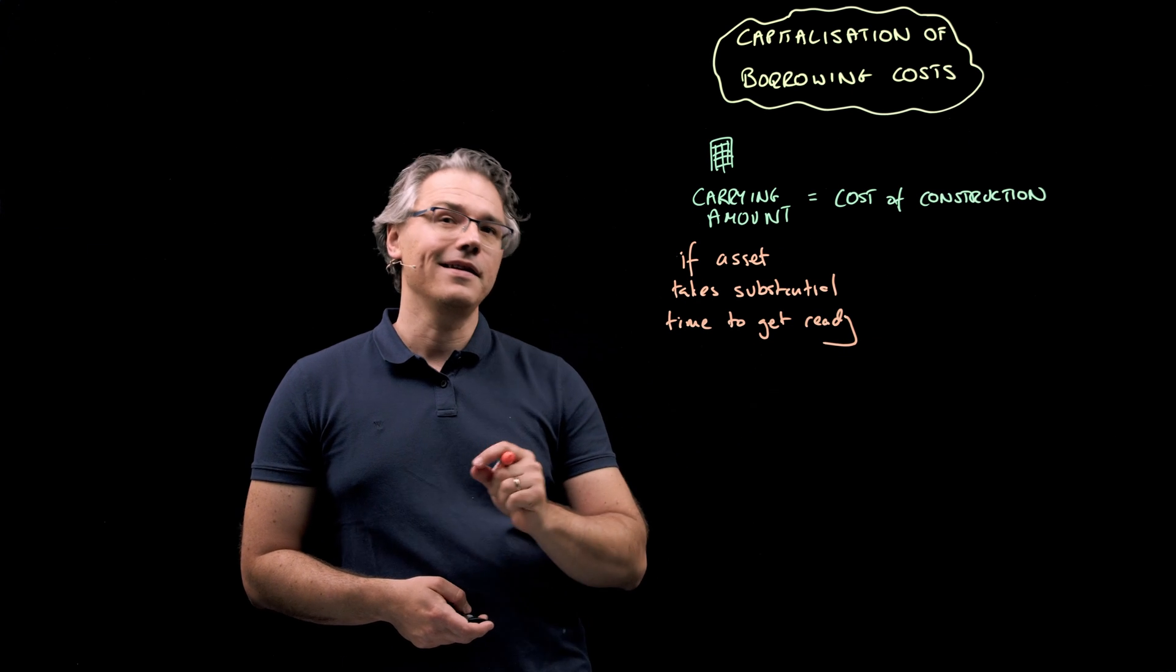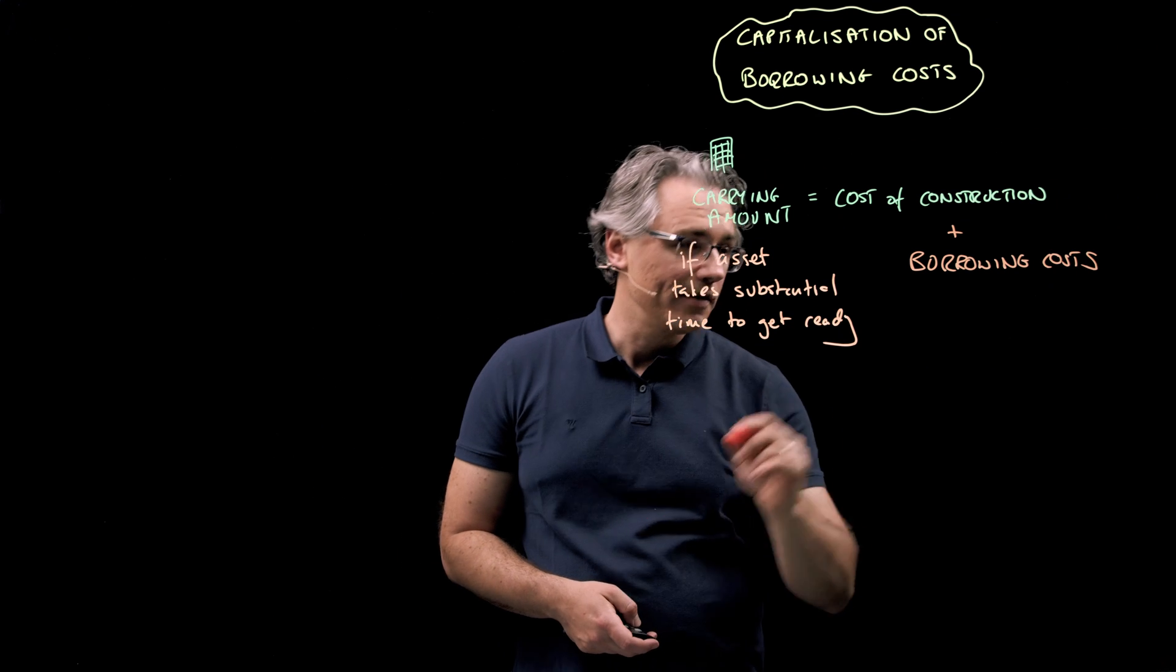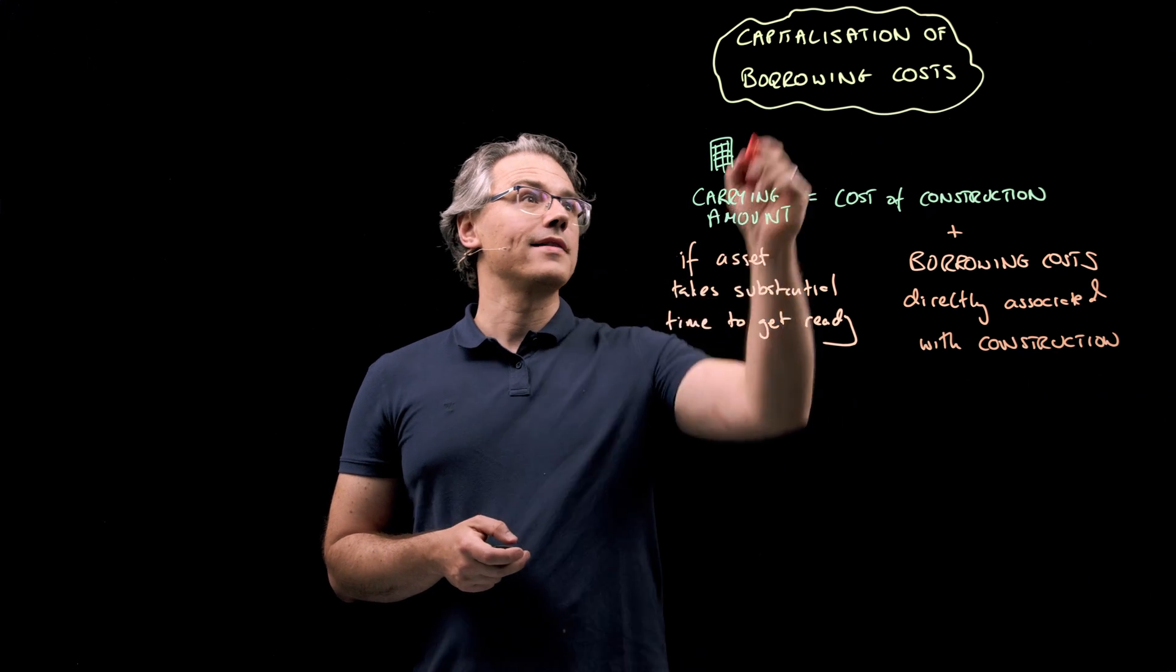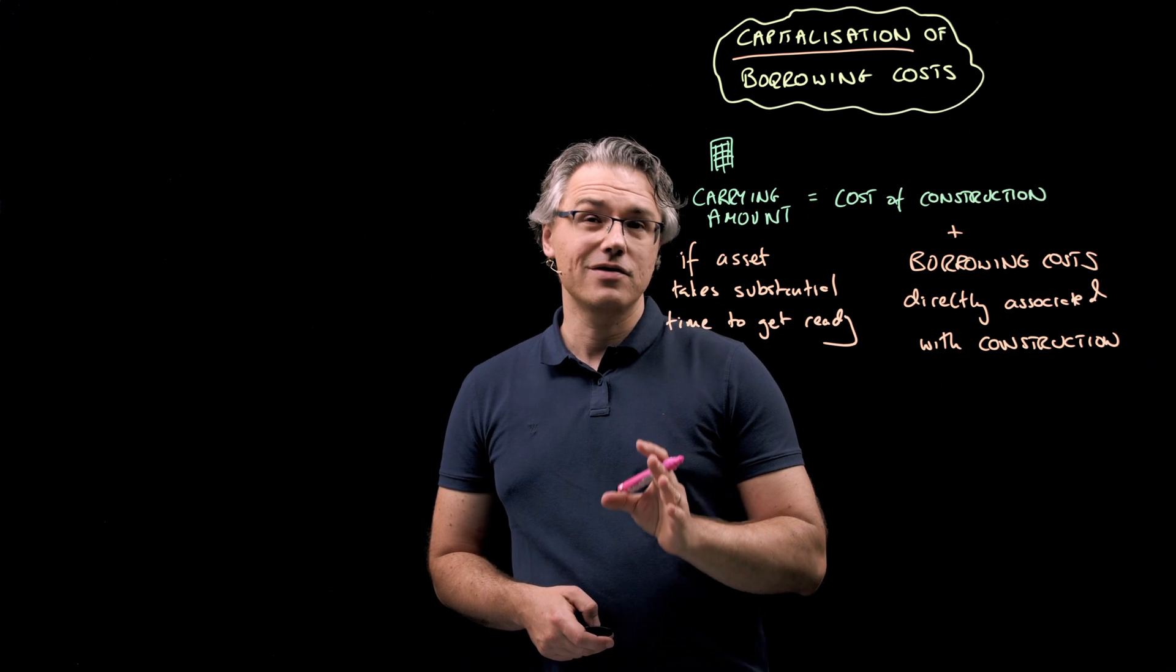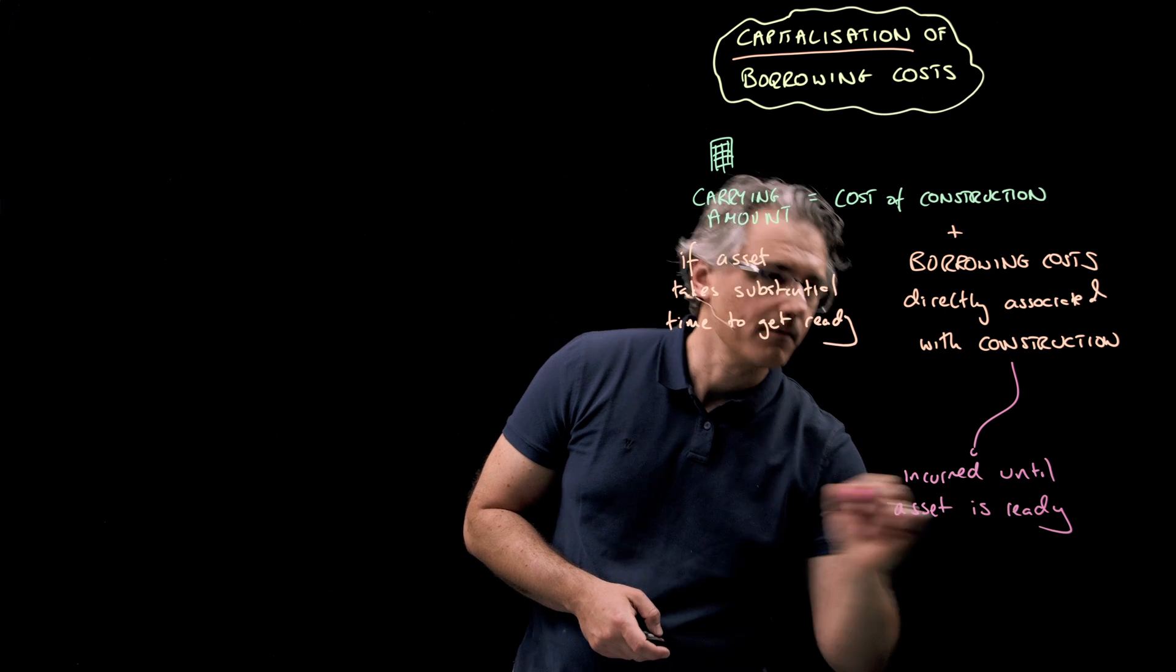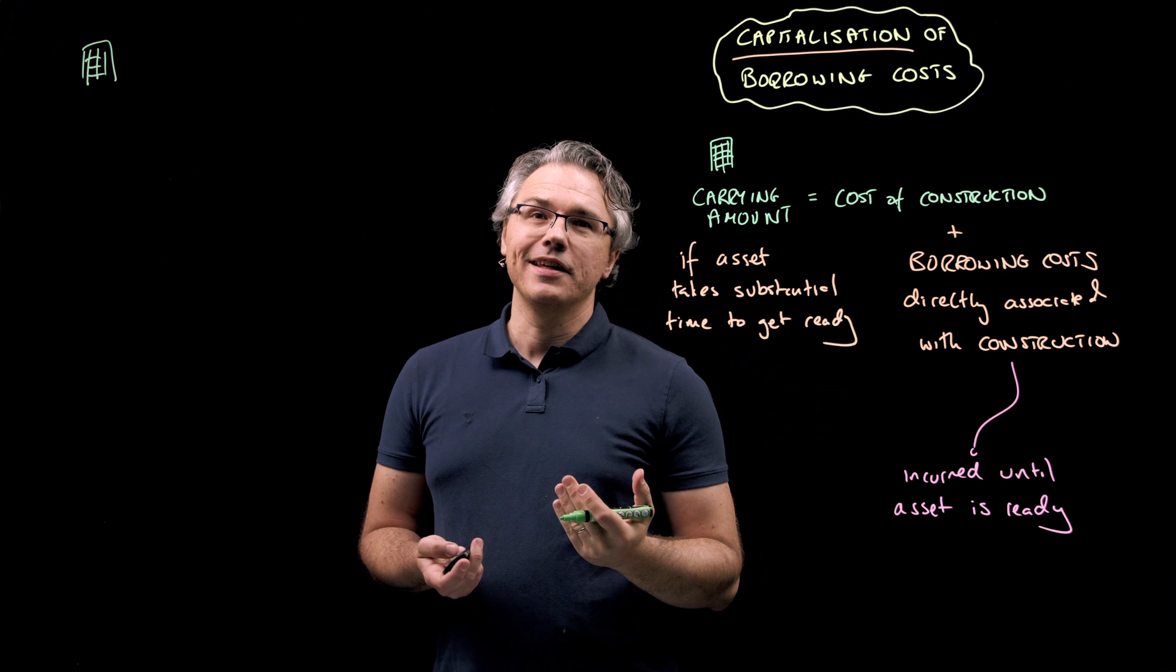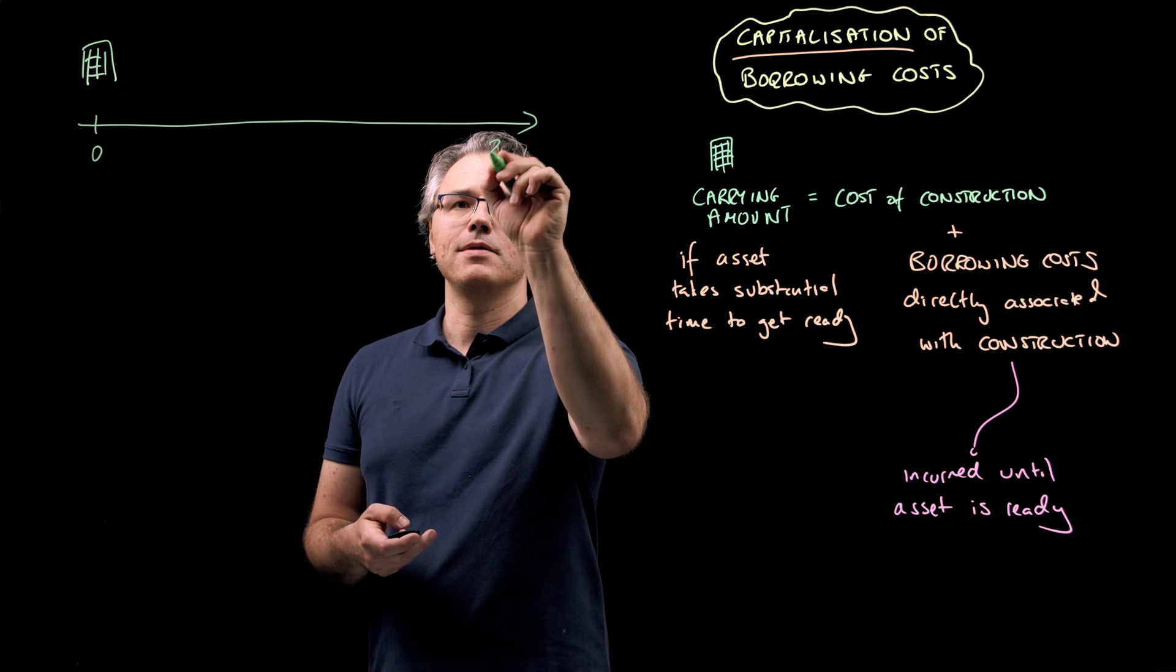And you can safely assume that an office building is precisely such an asset. We should also include in its carrying amount any borrowing costs directly associated with the construction. And including these costs in the carrying amount or book value of the asset is generally referred to as their capitalization. Let me however stress that this is only possible in respect of costs incurred until the asset is actually ready for use. So in this case, we've got an office building whose construction is funded via a 20-year bond issue.